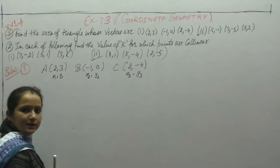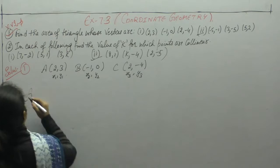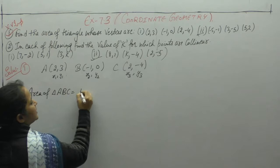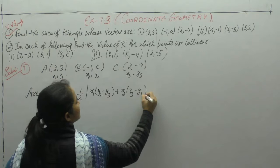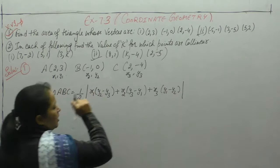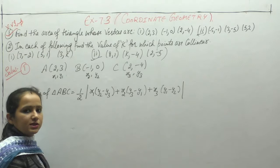Area of triangle from the formula is found. Area of triangle ABC is equal to half modulus of x1(y2 minus y3) plus x2(y3 minus y1) plus x3(y1 minus y2). Modulus sign हमने इसलिए लगाया क्योंकि area हमेशा positive होगा, negative में नहीं होगा.